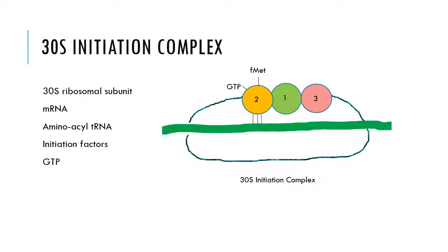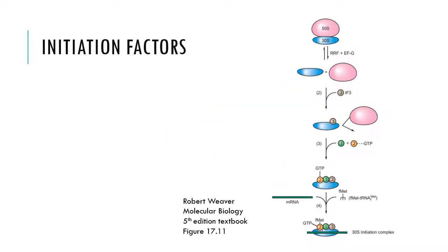One of the first things that needs to occur for translation in prokaryotes is the formation of the 30S initiation complex. Initiation factors are needed for this to happen. In prokaryotes, there are three initiation factors: IF1, IF2, and IF3.